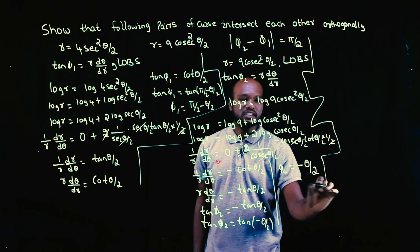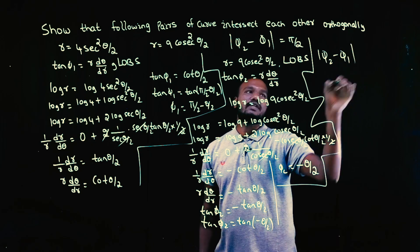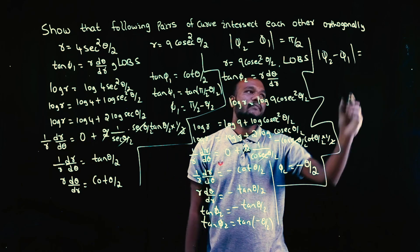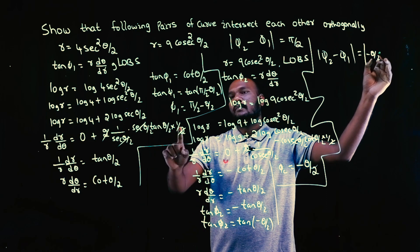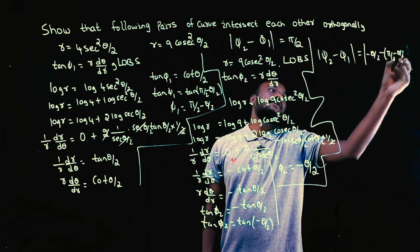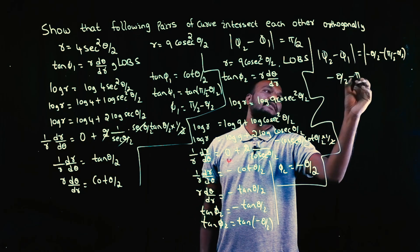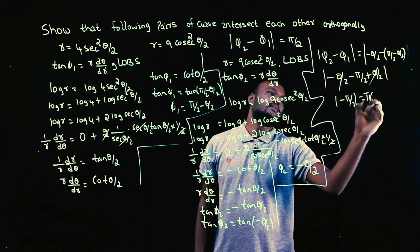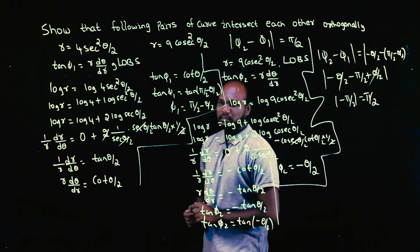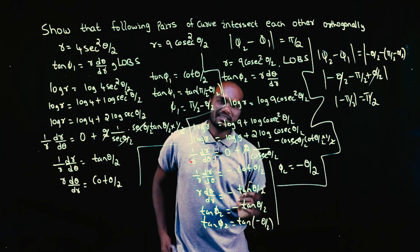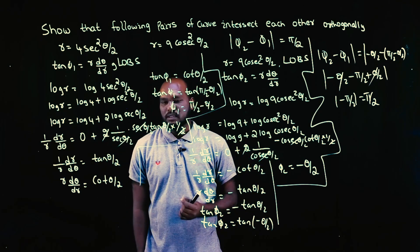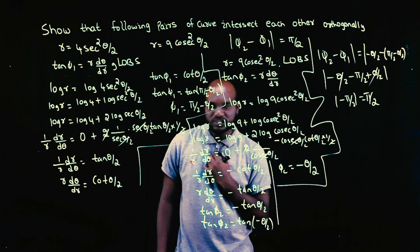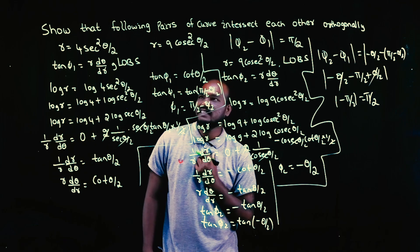We are not interested in φ₂ alone; the question asks for φ₂ − φ₁, which is the angle between the two curves at their intersection. So φ₂ − φ₁ = (−θ/2) − (π/2 − θ/2) = −θ/2 − π/2 + θ/2. The θ/2 terms cancel, leaving −π/2, and taking the modulus gives π/2. The question is proved. You will only find it difficult if you do not know the basic formulas of trigonometry or differentiation — all of those topics are covered in our course.